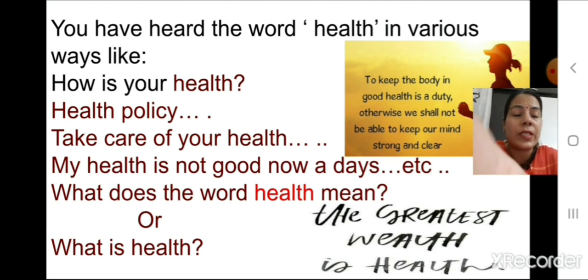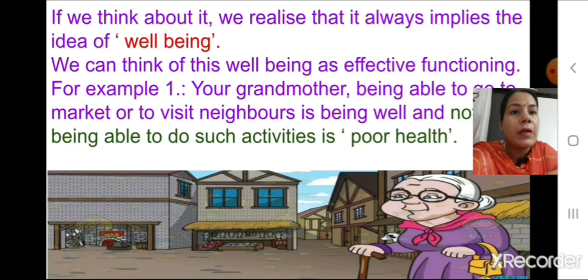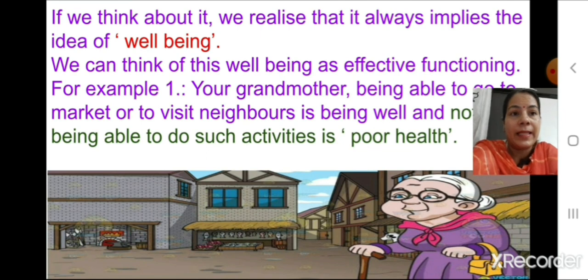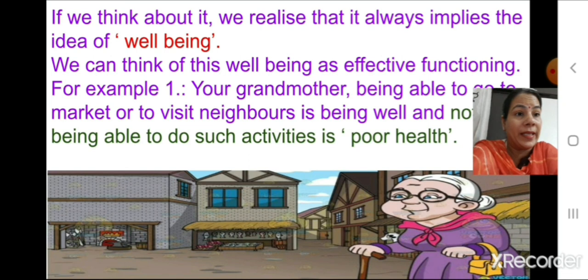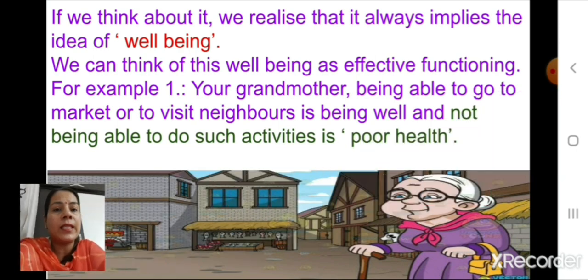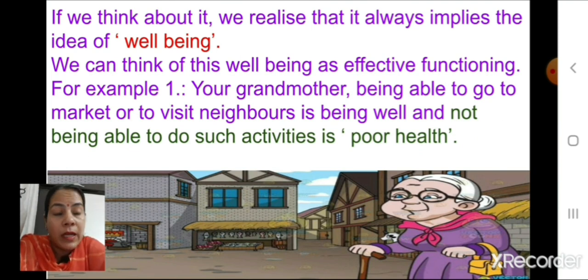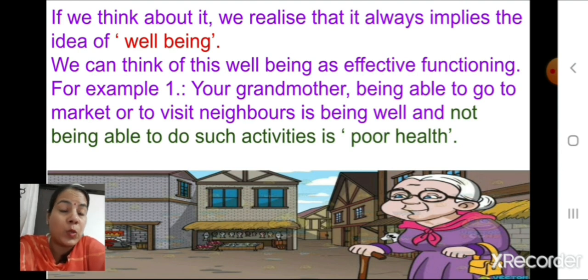To answer this, we need to focus on well-being with some examples. Health always implies the idea of well-being, which we can think of as the effective functioning of the body. For example, an old grandmother who goes to the market to buy groceries and visits neighbors — she is doing her work properly.